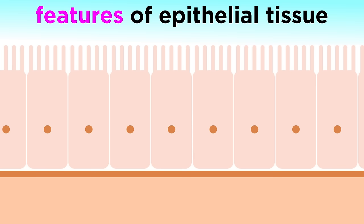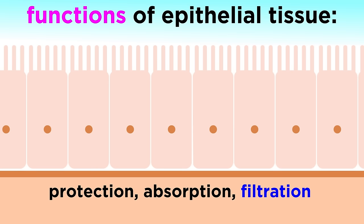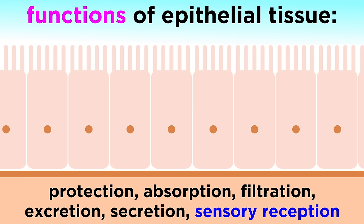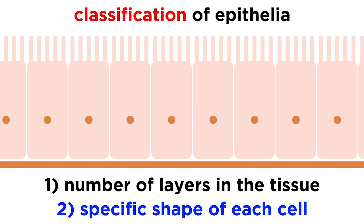So these are the features of epithelial tissue which allow it to perform a variety of functions, including protection, absorption, filtration, excretion, secretion, and sensory reception. Now let's discuss further classification of epithelial cells, as they vary in the number of layers present in a tissue, as well as the specific shape of each cell.